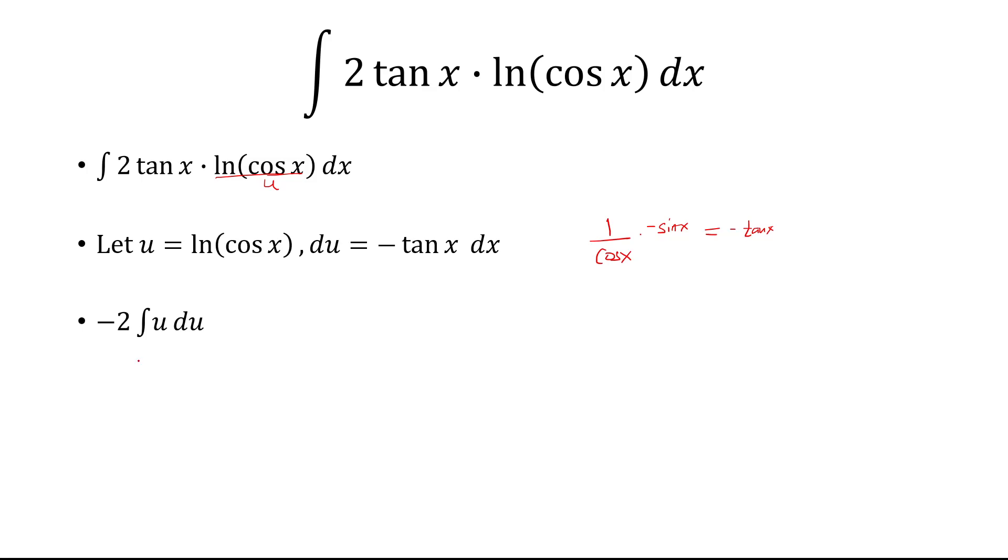We find the antiderivative. The antiderivative of u is just u squared over 2, the 2's are going to cancel. I'm left with negative u squared plus c, and then u we said was ln of cosine x, so we have negative ln squared of cosine x plus c.